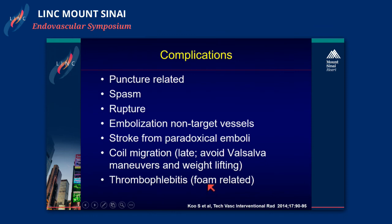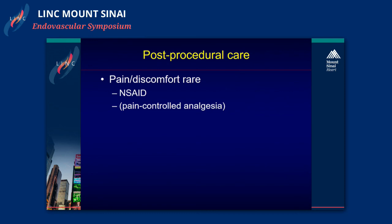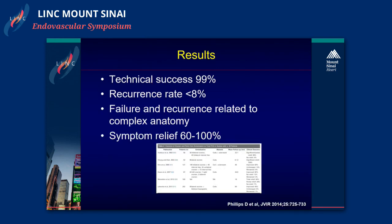Complications are few. They can be puncture-related, spasm or rupture, embolization of non-target vessels, stroke from paradoxical emboli — typically seen with glue — coil migration, and thrombophlebitis, which is also foam or glue-related. Pain or discomfort is rare and is usually treated with standard analgesia; there is hardly ever need for pain-controlled analgesia with an epidural catheter. Technical success is almost 100%. There is still a recurrence rate, but with meticulous technique that number can be brought down. Failure and recurrence are typically related to complex anatomy.